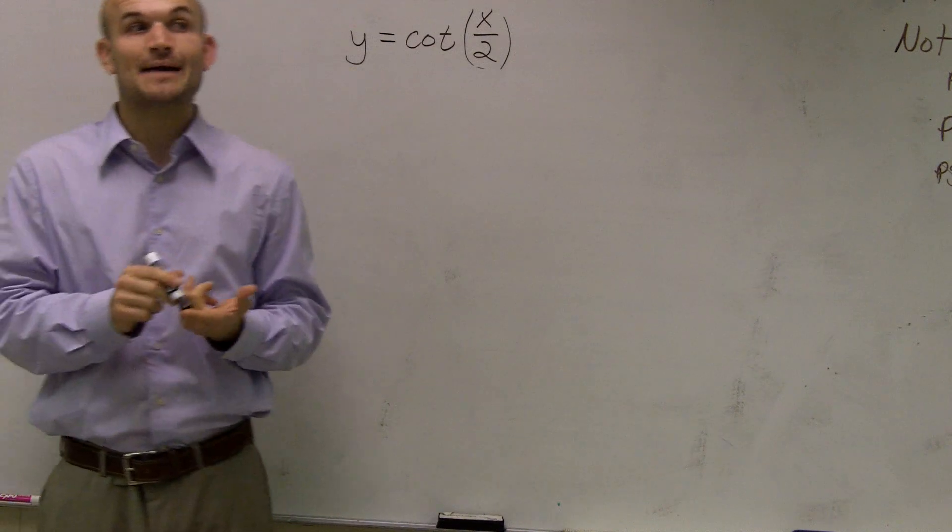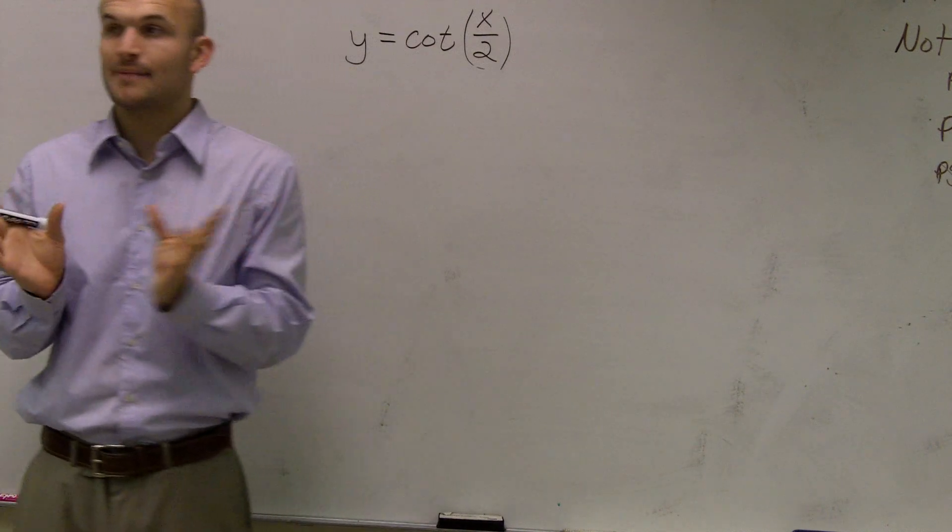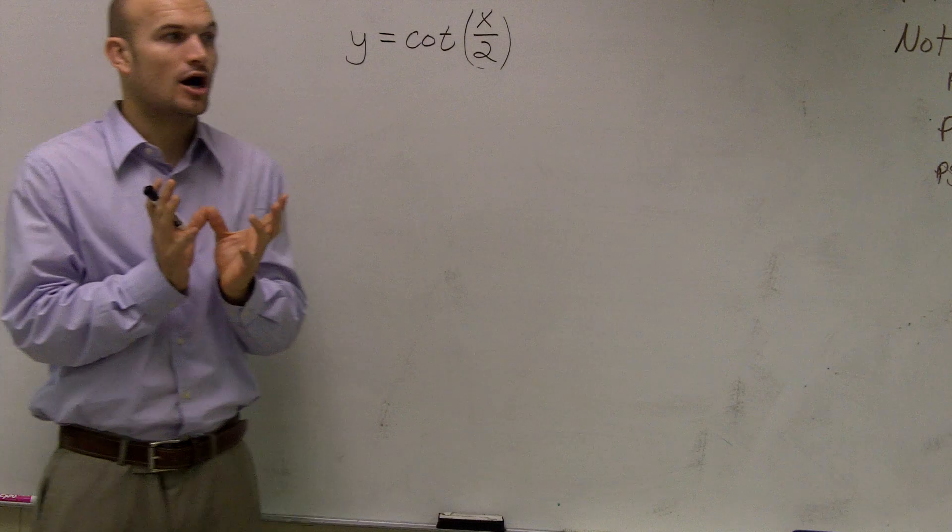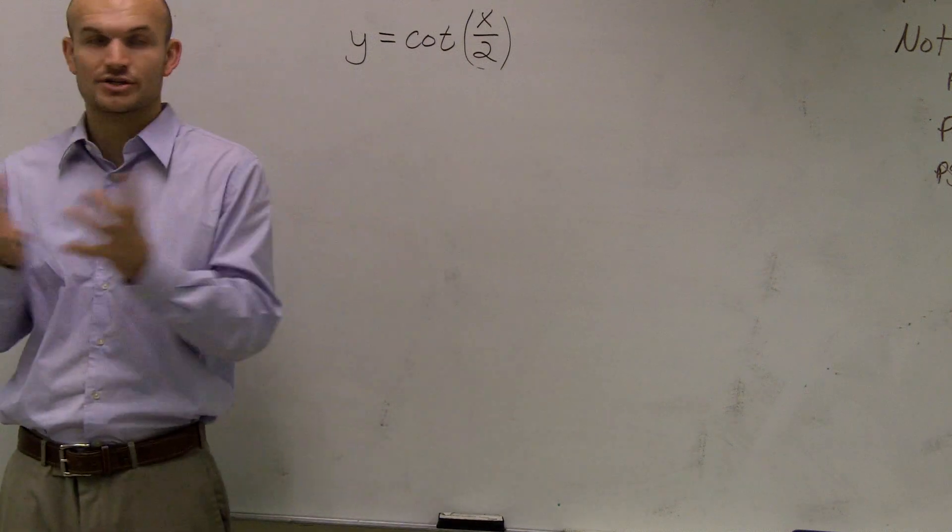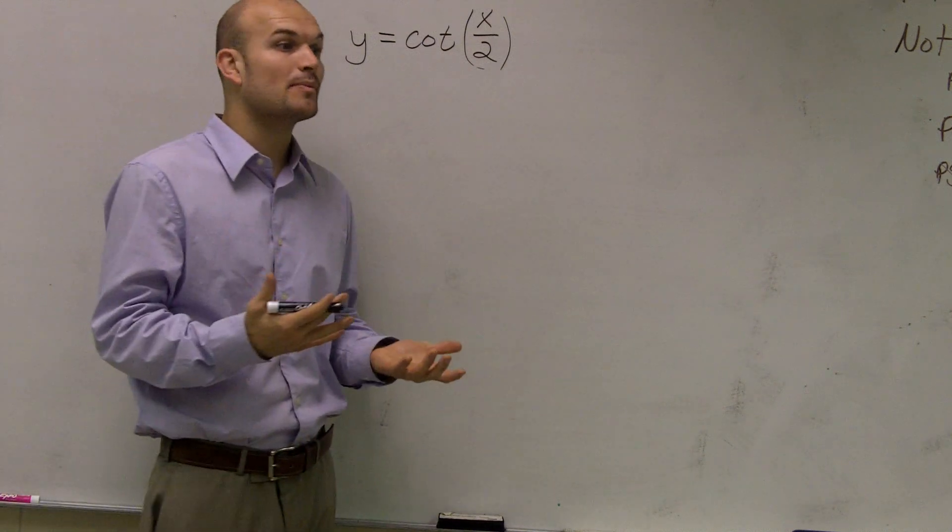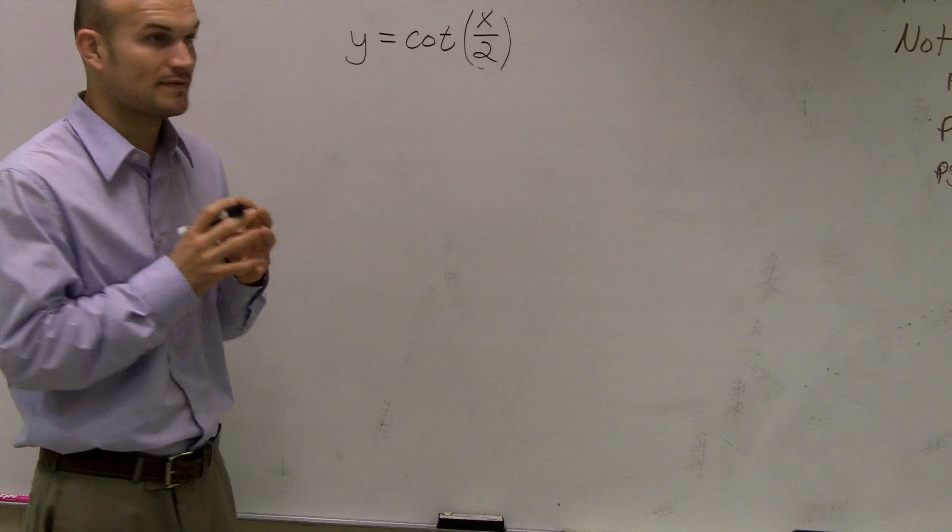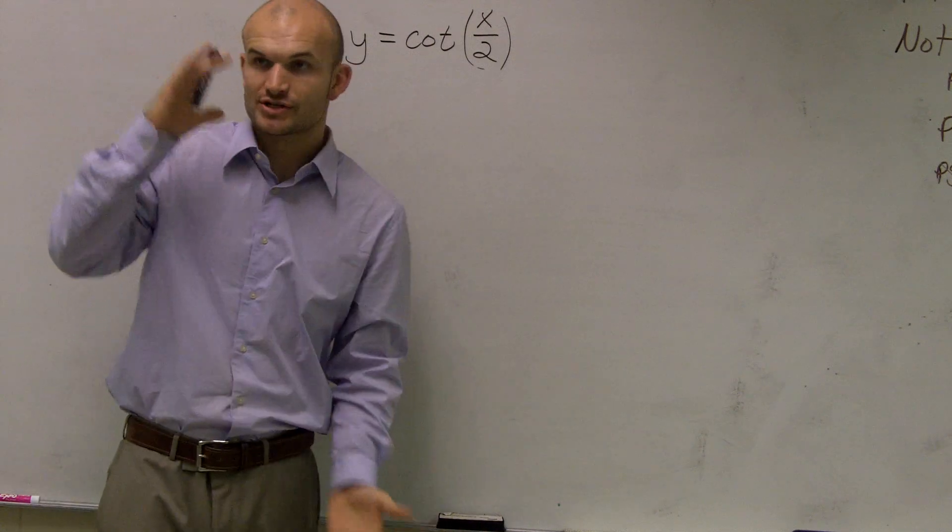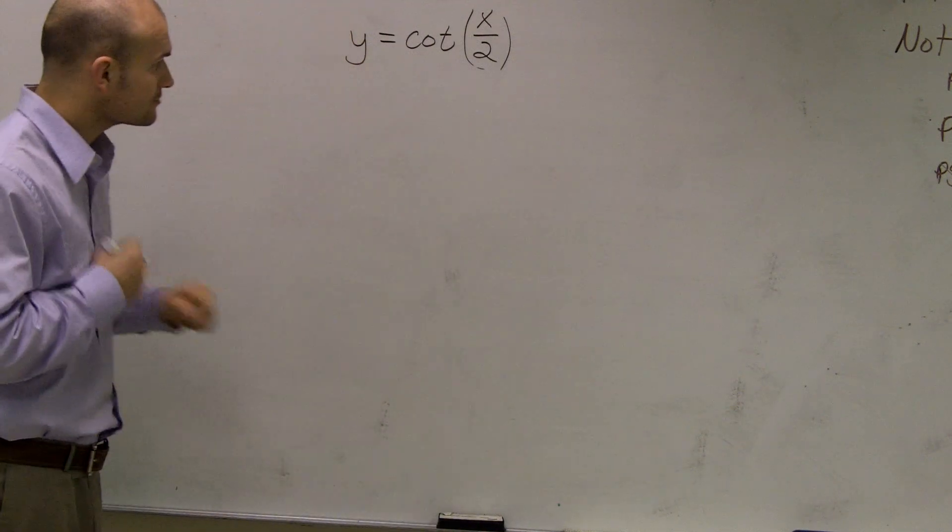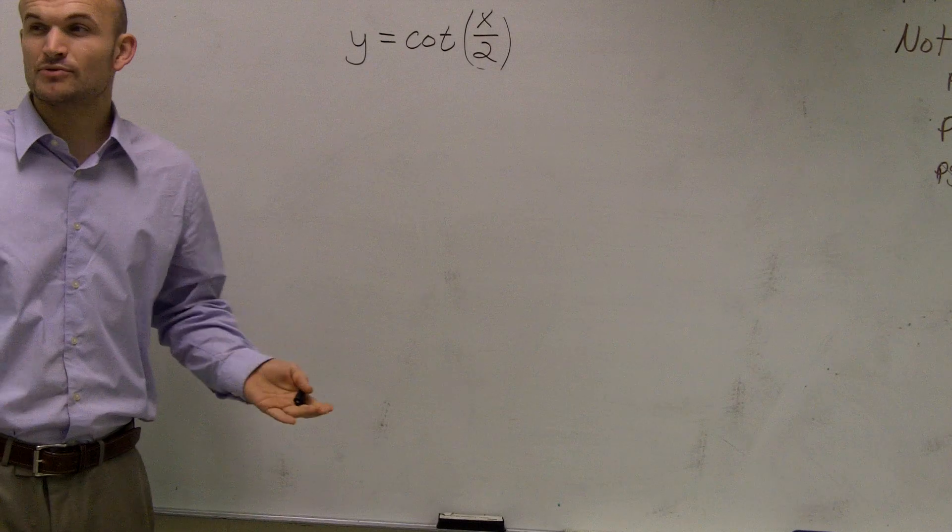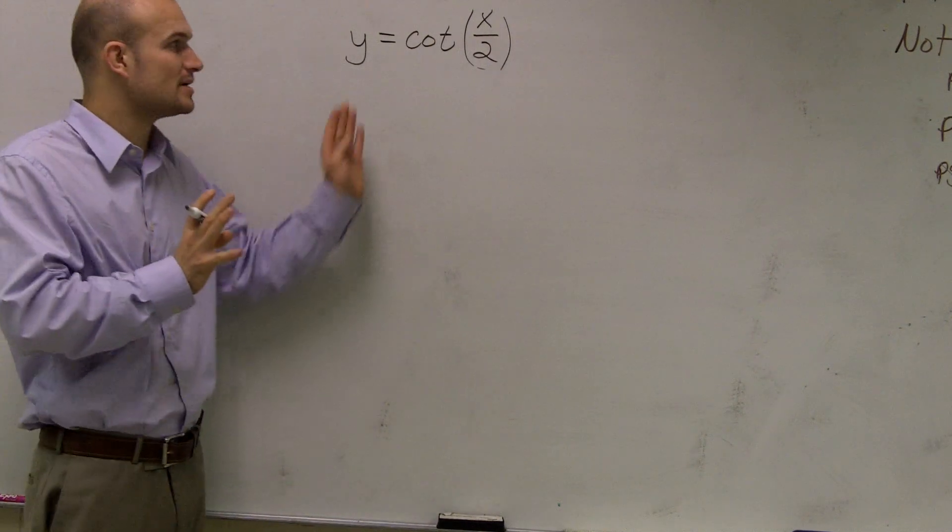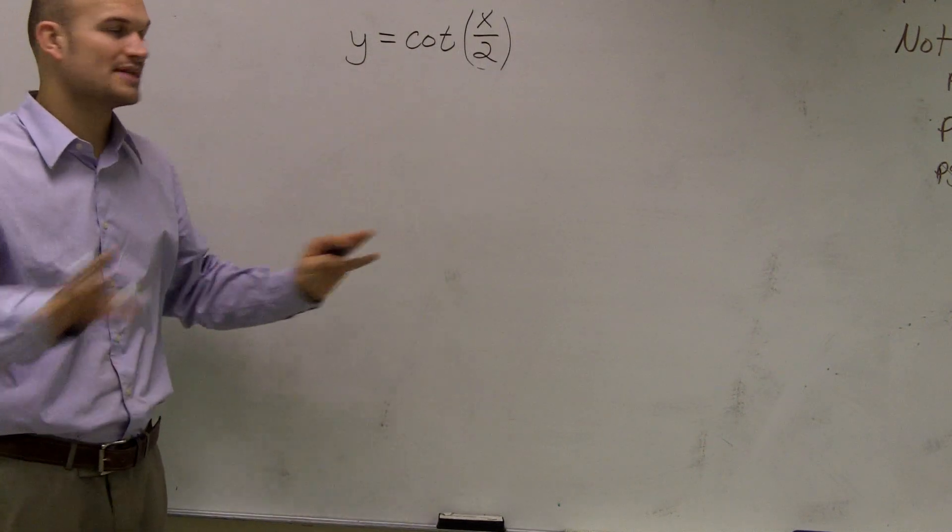First of all, we do not have an amplitude anymore. Our amplitude, that number in front, a, is going to tell us our stretch and compression. But we need to remember by looking at the parent graph of cotangent function, we don't have a restriction on our amplitude. So we're not going to be interested really with finding the amplitude. The amplitude will help us determine the shape of the graph, but that's really about it.